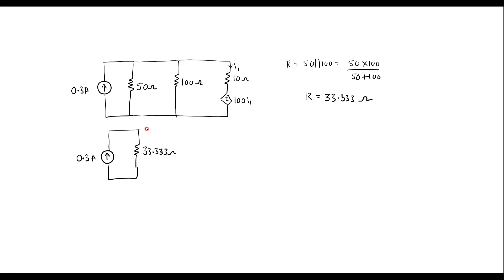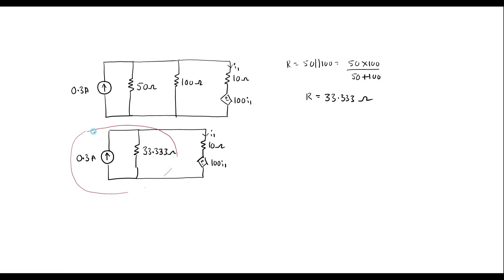I will connect this branch as it is — 100·I1 and 10 ohm with current I1. Now I will convert this current source, which is in parallel with the resistor, into a voltage source. That is V = I × R, so V = 0.3 × 33.333.